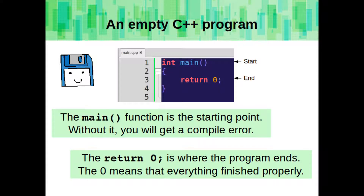The main function is the starting point of your program. Without it, you will get a compile error. The return 0 is where the program ends. The 0 means that everything finished properly.